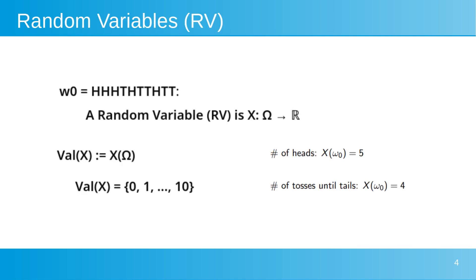A random variable is a function that converts the outcomes of random events into numbers, making it easier to analyze and work with them. In this case, the sequence consists of 10 elements, where H stands for heads and T stands for tails in coin tosses. X is a random variable that maps from the sample space omega to the set of real numbers R. Value X refers to the set of all possible values that the random variable X can take, and X(omega) represents the values that X takes for each element in omega.